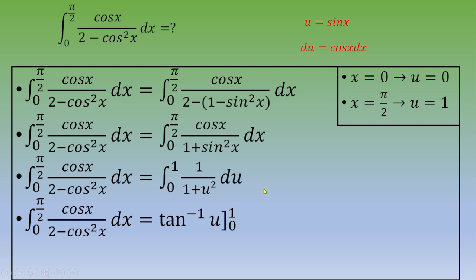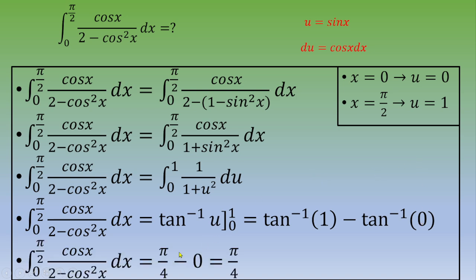So if we expand, we've got tan⁻¹(1) minus tan⁻¹(0), and this is π/4 minus 0, which is π/4.